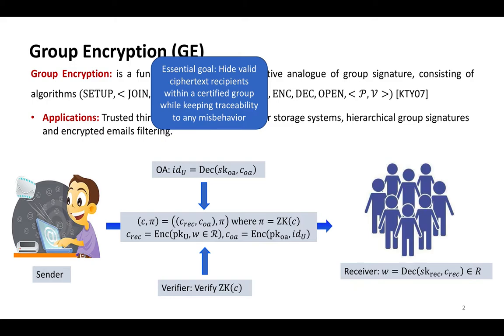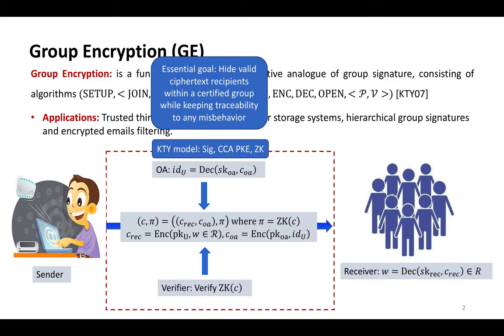Group encryption involves five parties: a group manager who manages the group, an opening authority who de-anonymizes the ciphertext when a dispute occurs, a sender, a verifier, and users. According to the KDWA model, the group encryption scheme can be constructed from a secure digital signature, CCA2 anonymous public key encryption, and zero-knowledge argument. When a sender wants to securely transmit a witness complying to relationship R to a member belonging to a group, it encrypts the witness under the user public key and encrypts the recipient's identity under the opening authority public key, then generates a zero-knowledge argument to demonstrate that the ciphertext is well-formed.